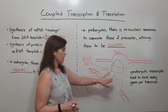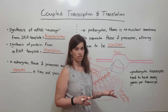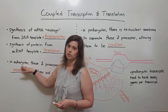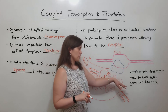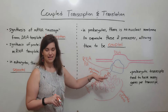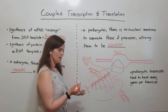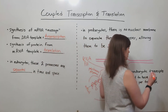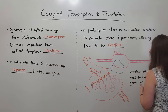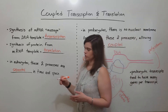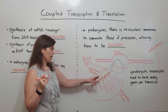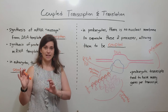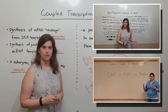I want to point out one more thing: prokaryotic transcripts tend to have many genes per transcript, which is not the case with eukaryotes, which usually only have one gene on each mRNA transcript. So prokaryotic transcripts — meaning the mRNA — can have many distinct genes on them. This is known as polycistronic, meaning that within one long mRNA transcript, there can be ribosomes translating along different parts of it resulting in different proteins.